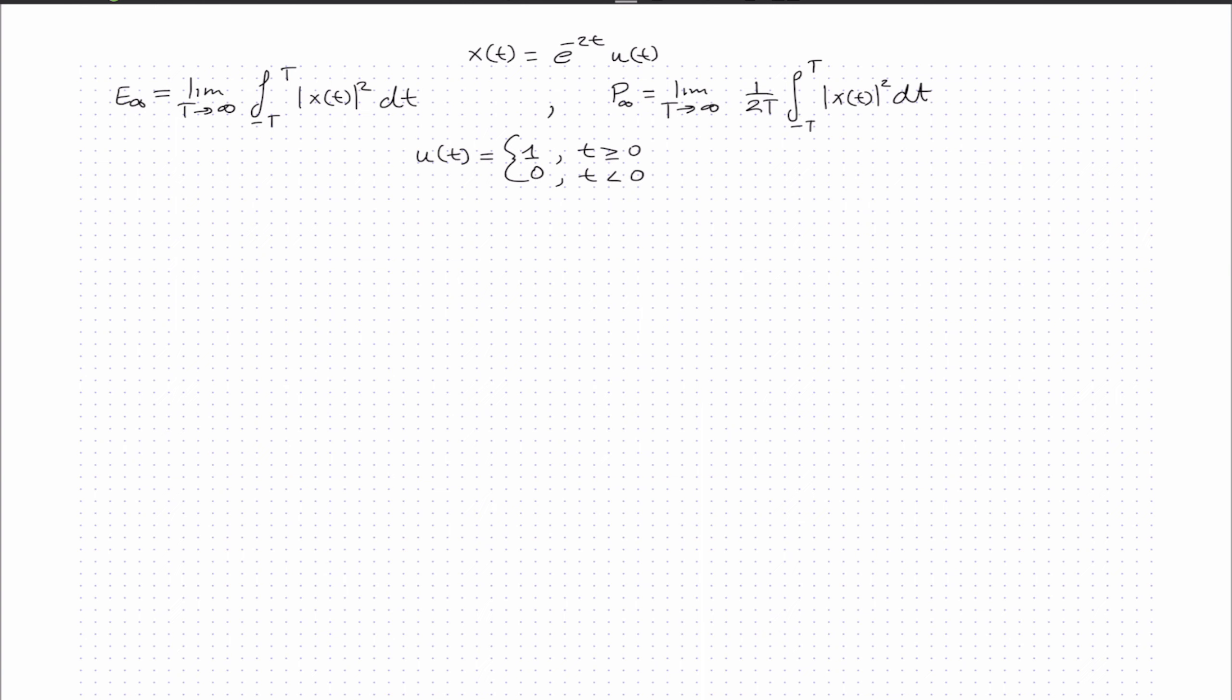We have the average power, which is the limit as T approaches infinity of 1 over 2T times the integral. We take the integral of the absolute value of x(t) squared over whatever interval the signal is defined.